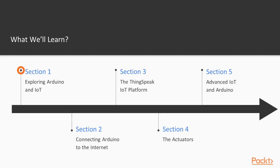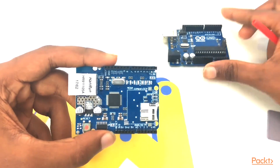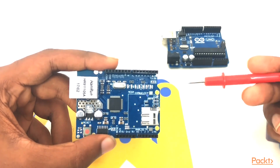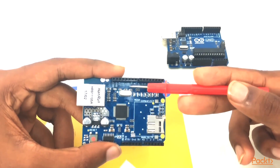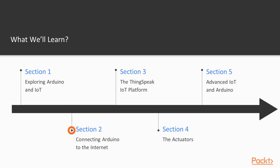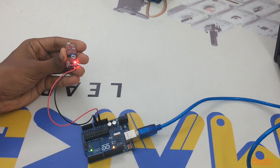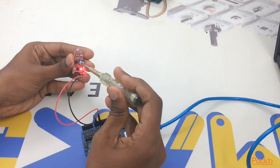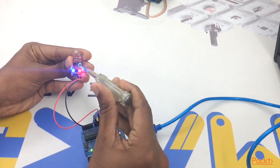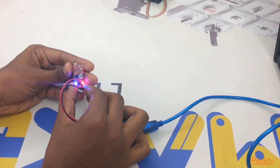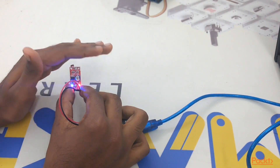The first section is exploring IoT and Arduino. In this section, you will take a quick tour of Arduino and IoT, and learn what smart agriculture is. In the second section, connecting Arduino to the internet, you will learn how to connect Arduino to the internet using an Ethernet shield. After that, we will learn about the sensors we will be using in these projects, and how to get sensor values to display on a web browser.